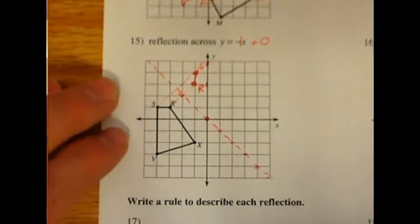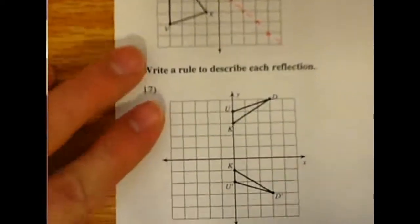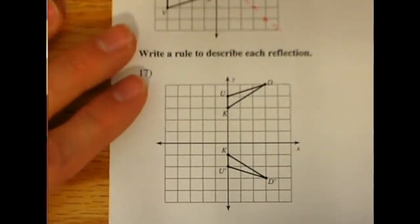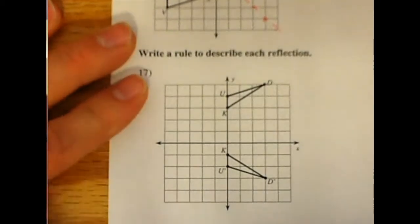Last couple is writing the rule. If we go down to the bottom, we see number 17. You're trying to create a rule to see how did this reflection happen.